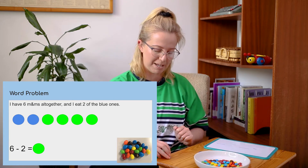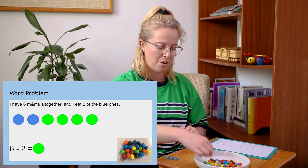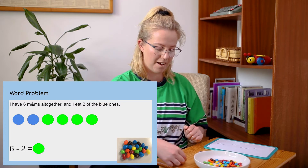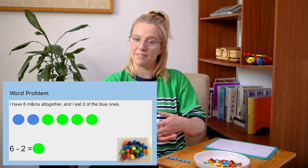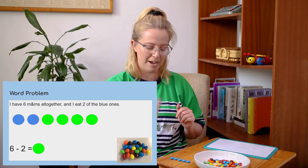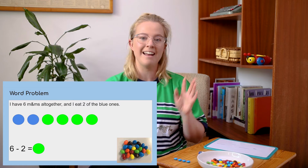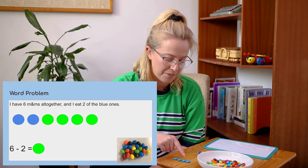We've got six M&Ms all together — one, two, three, four, five, six. And then the word problem says I have six all together and then I eat two of them. So let's do that — one, two. Now that I've eaten two of them, that shows us how many we have left over. So I had six all together, I ate two of them. Let's count how many are left over.